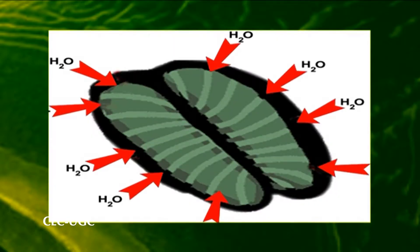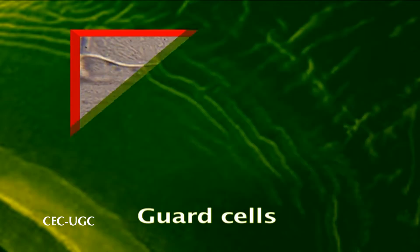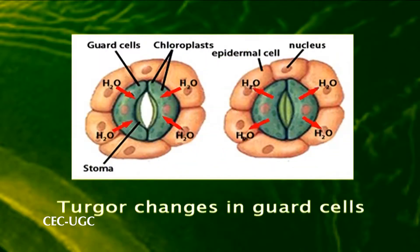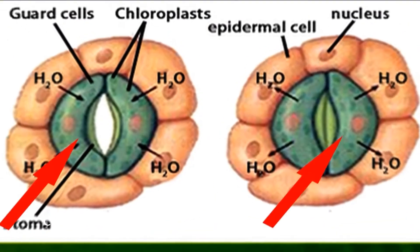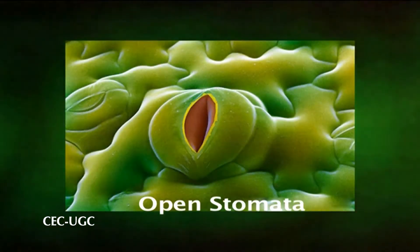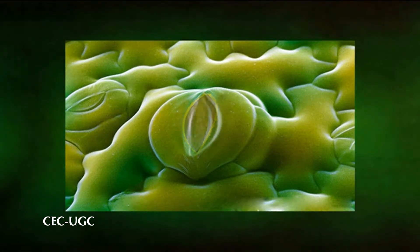Water movement between the guard cell and surrounding tissue is driven by changes in guard cell osmotic potential. The resulting changes in turgor are translated via a specialized cell wall structure into changes in the size of the stomatal pore. The fundamental role of osmotic potential was demonstrated in the mid-19th century by Von Moll in 1856, who showed that open stomata could be made to close by placing them in solutions of increasing osmotic strength.